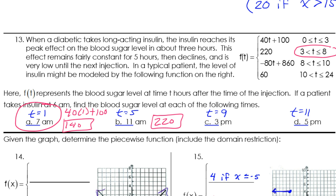When t is 9, well, that's between 8 and 10. So that puts us in this zone. That tells us to use this part of the function. So that's negative 80t. So that's negative 80 times 9 plus 860. What does that turn out to be? Negative 720 plus 860, which is 140.